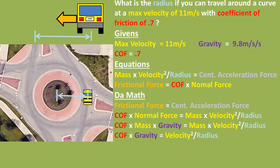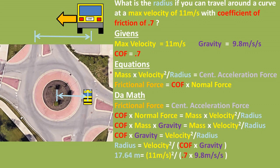We can use the same formulas, but this time we are trying to get the radius to one side of the equation. We can start out by multiplying both sides by the radius and dividing both sides by the coefficient of friction times gravity. We are left with the radius being equal to the velocity squared over the coefficient of static friction times gravity. Plugging in our numbers, we get a radius of 17.64 meters.